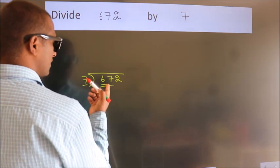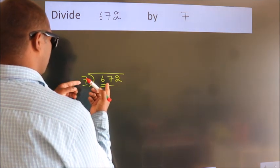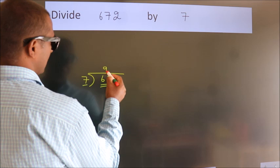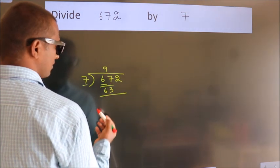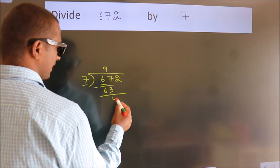A number close to 67 in the 7 table is 7 nines, 63. Now we should subtract. We get 4.